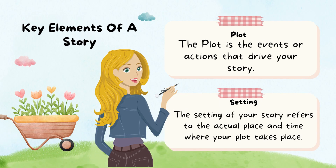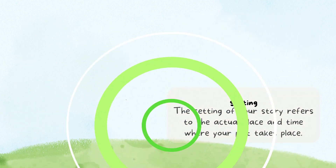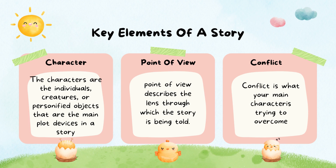Plot: The plot is the events or actions that drive your story. Setting: The setting of your story refers to the actual place and time where your plot takes place. Character: The characters are the individuals, creatures, or personified objects that are the main plot devices in the story. Point of View: Point of View describes the lens through which the story is being told. Conflict: Conflict is what your main character is trying to overcome.